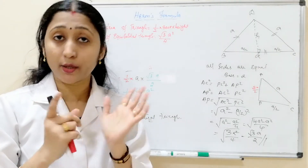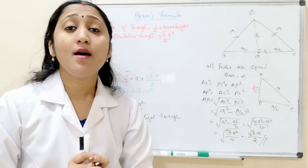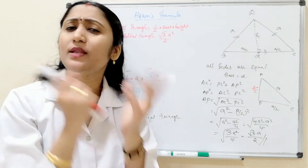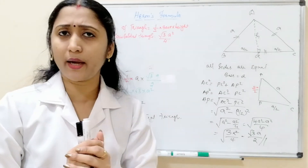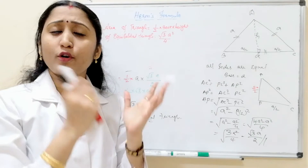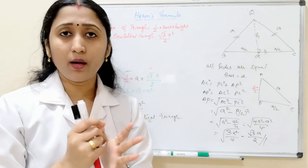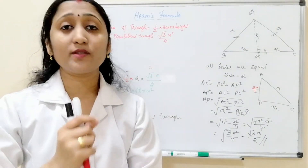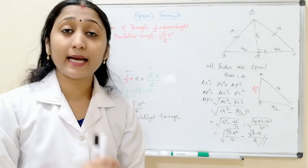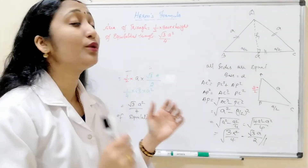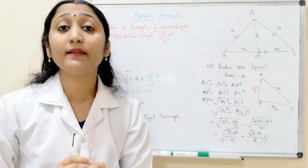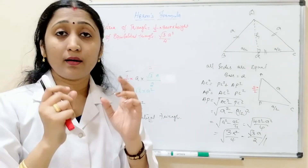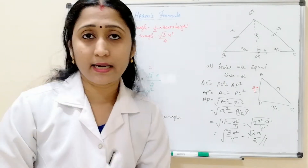Another formula is Heron's formula, which is applicable to all triangles. There is also the area of an isosceles triangle — one formula for that can be derived — but there is no need to memorize it. It is very easy to memorize just the two formulas already discussed. The isosceles triangle formula is more complicated, so you do not need to memorize it.